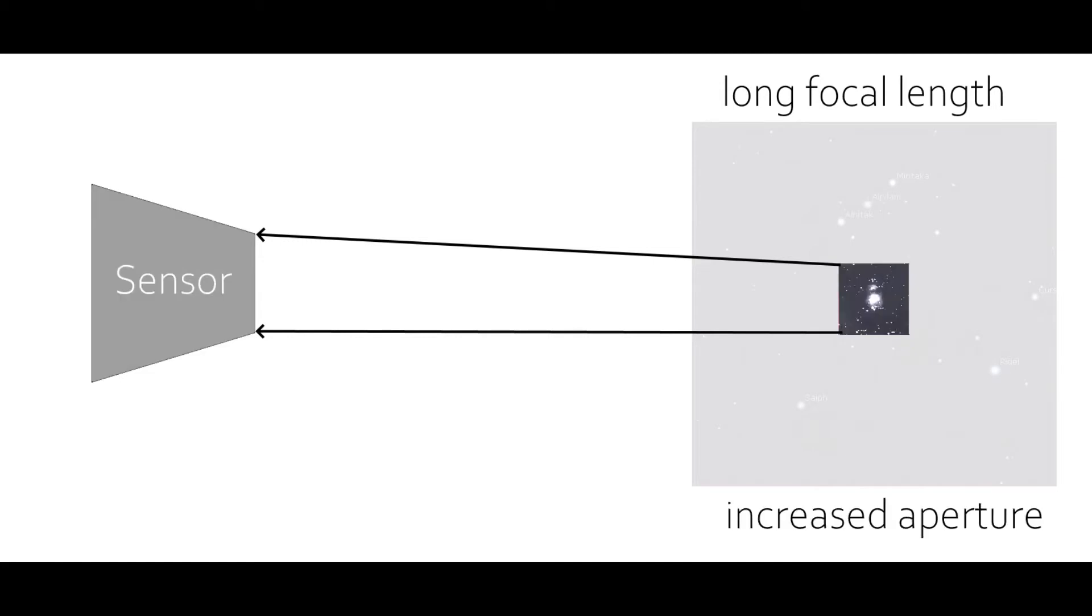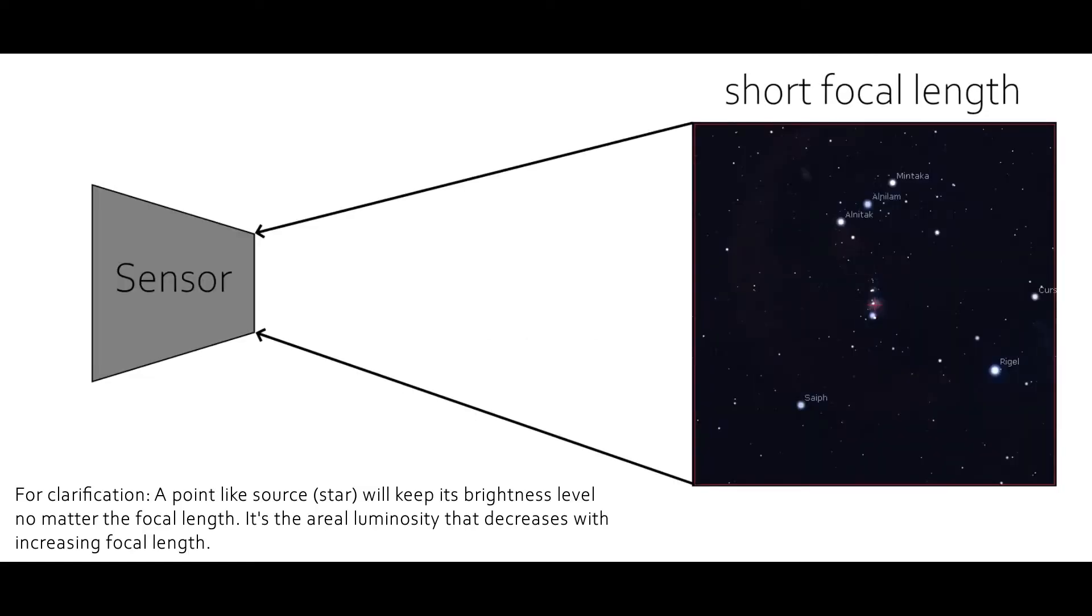On the other hand, if you increase the aperture of the scope, then you will get more light from the same patch of the sky and the image will be brighter again. So longer focal length means darker image but larger aperture means brighter image. So it is possible for a long scope with a wide aperture to produce a brighter image than a shorter scope with a very narrow aperture.